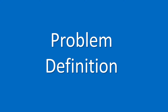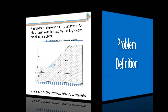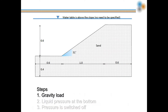First, let's do the problem definition. A small-scale submerged slope is simulated in 2D plane stress condition applying the fully coupled two-phase formulation. The problem has three states of calculations. In the first step, gravity load is applied in order to initialize the stresses.